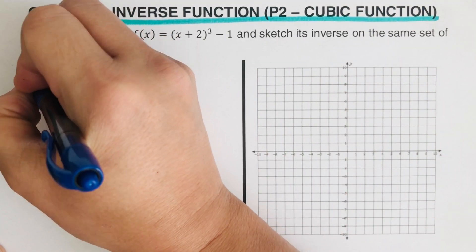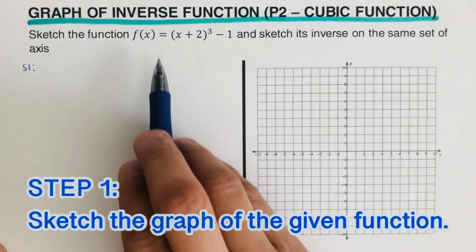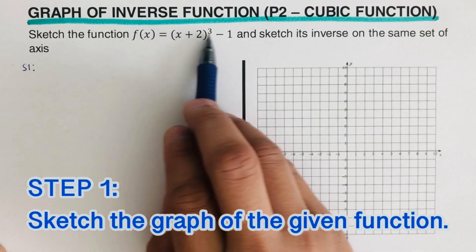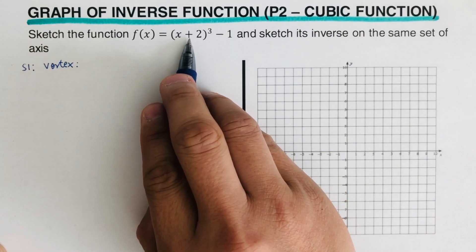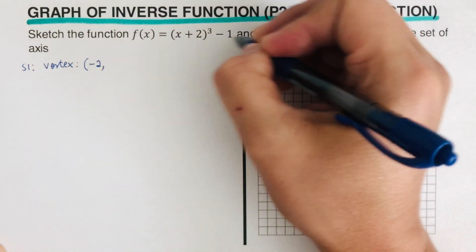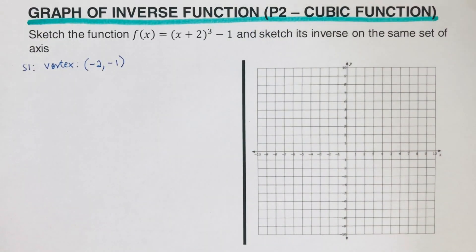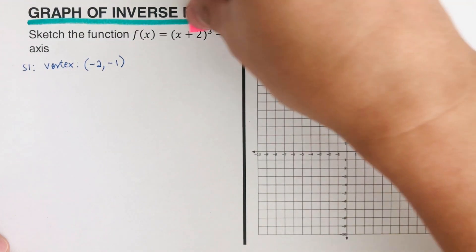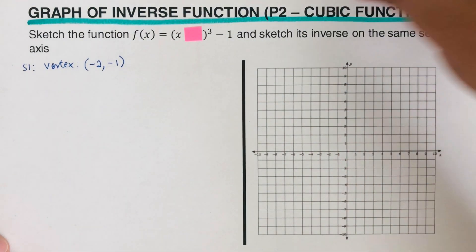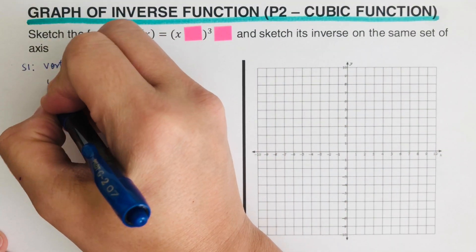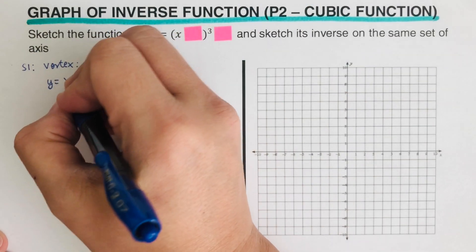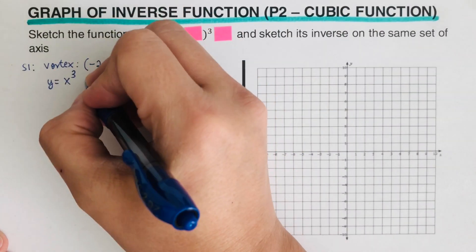Step 1: Sketch the graph of the given function. So this is the function we have here. We remember that our vertex — using 'switch and keep' — is at (-2, -1). We need to create a table to sketch the graph. The trick here is to cover the h and k, so our equation becomes y = x³.